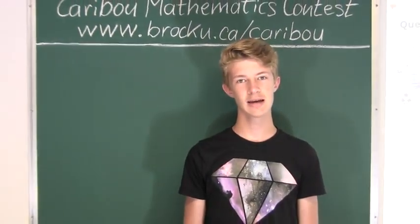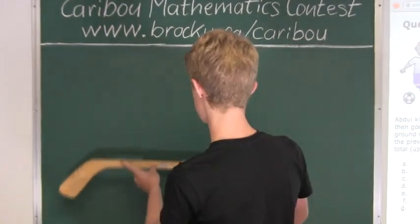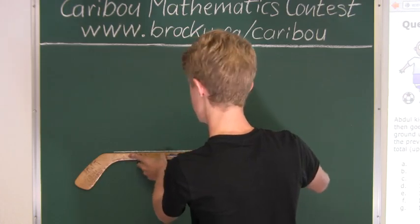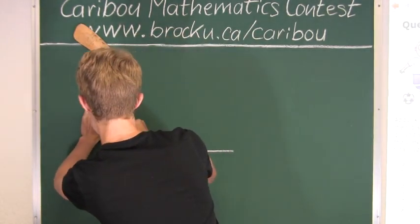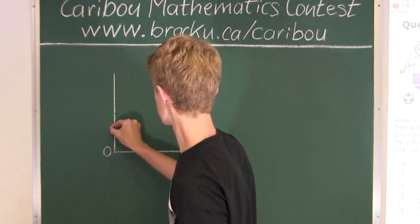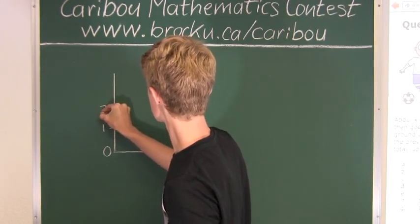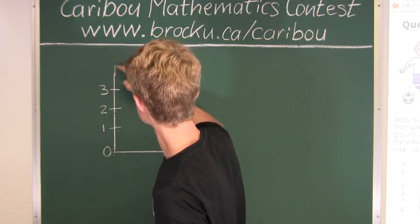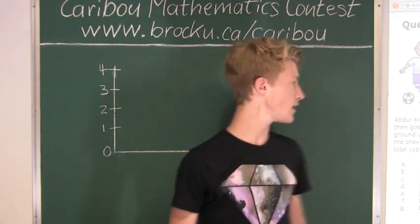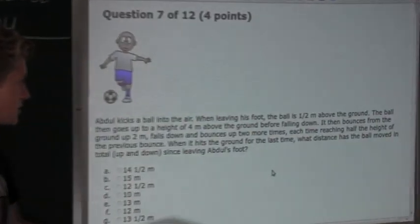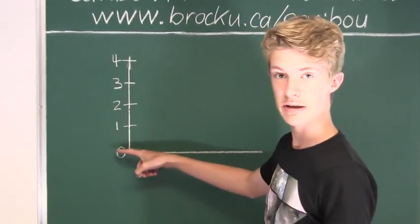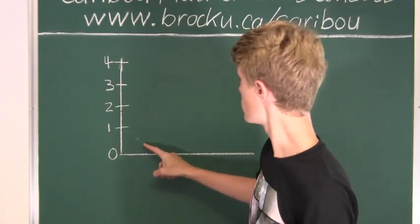So, let's draw a diagram and try to visualize what is going on in this question. Okay, so now let's see what it says. It says the ball is half a meter above the ground, and then it goes up to a height of 4 meters. So now let's show this. You know that half a meter is in between 0 and 1, so right about here. And we know that it goes up to 4 meters.